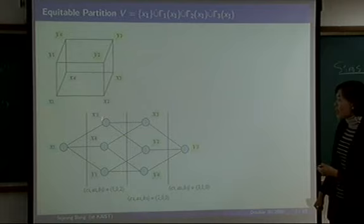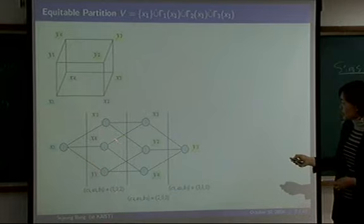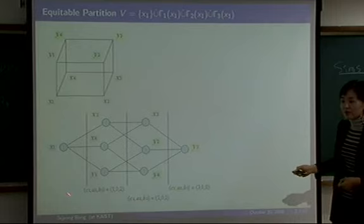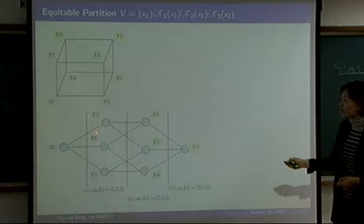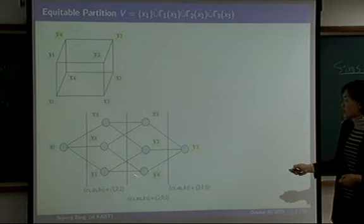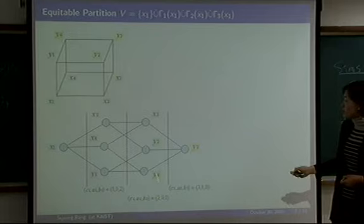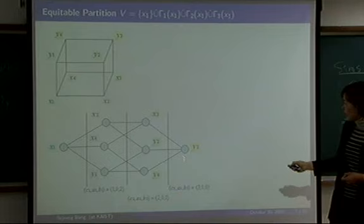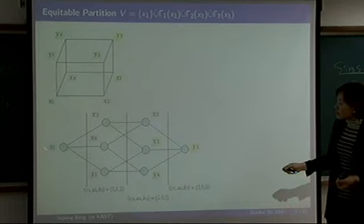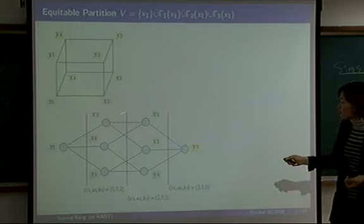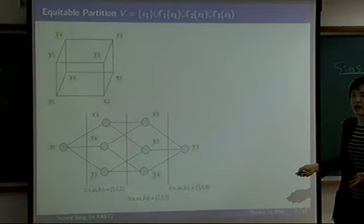For example, every vertex in the first column has a unique neighbor in the previous column — call this number c₁ — zero neighbors among themselves (a₁), and two neighbors in the next column (b₁). Similarly, for the second column, any vertex has c₂ neighbors in the previous column, a₂ neighbors among itself, and b₂ neighbors in the next column. Even if we change the base vertex, we get the same distance partition and the same parameters c_i, a_i, b_i. That is the definition of a distance-regular graph.